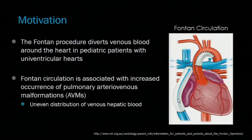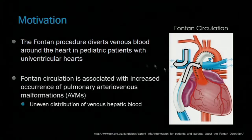This is thought to be caused by the possible uneven distribution of venous hepatic flow, which can occur when the IVC and SVC are offset. The IVC contains some currently unknown hepatic factor that, when excluded from a lung, seems to be a risk factor for AVM development. So if the IVC flows towards the left lung, the right lung would be at increased risk. This is supported by Fontan revisions to more evenly redistribute this flow, resulting in the regression of these AVMs.